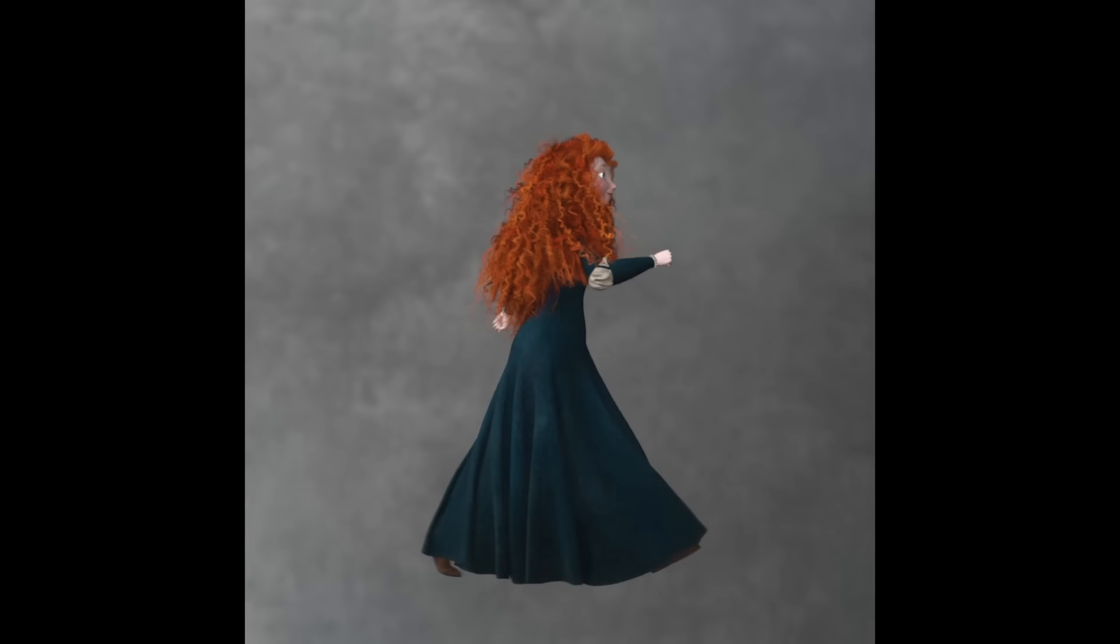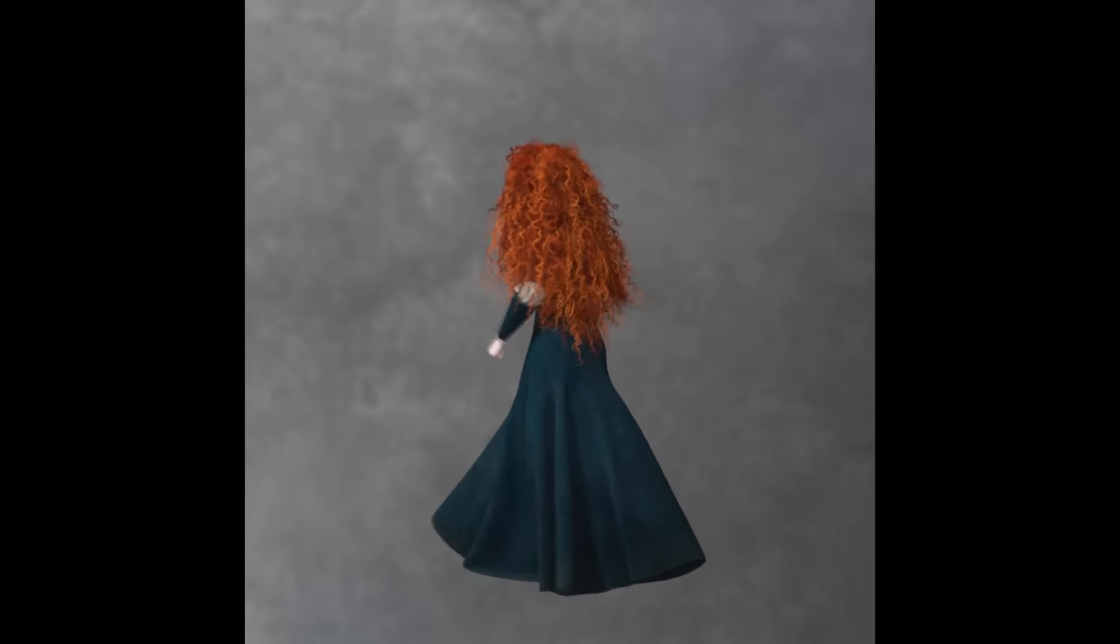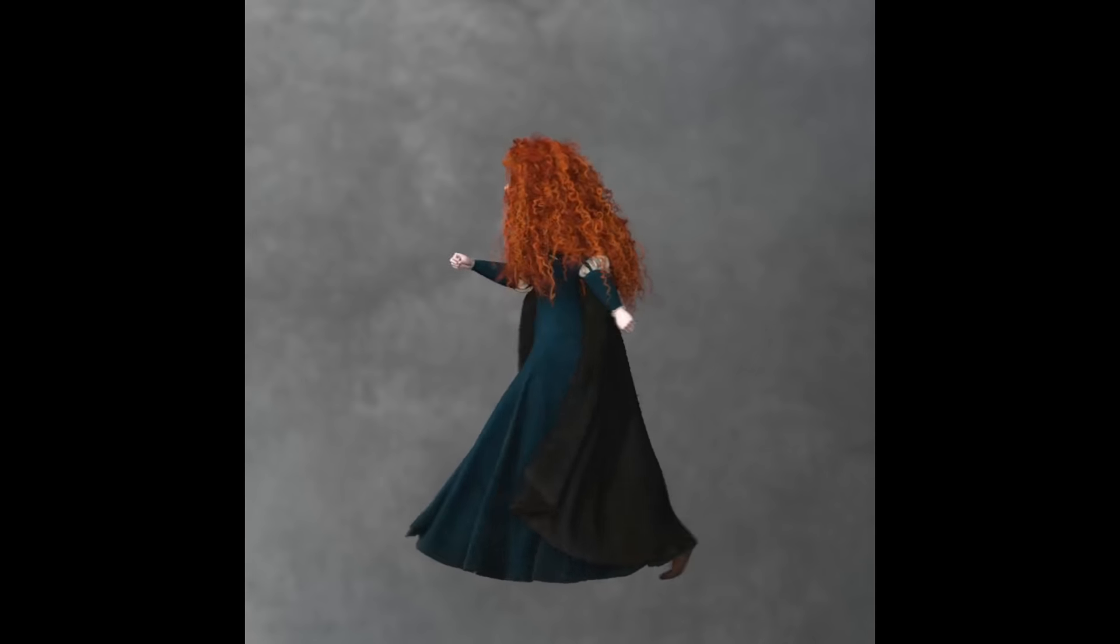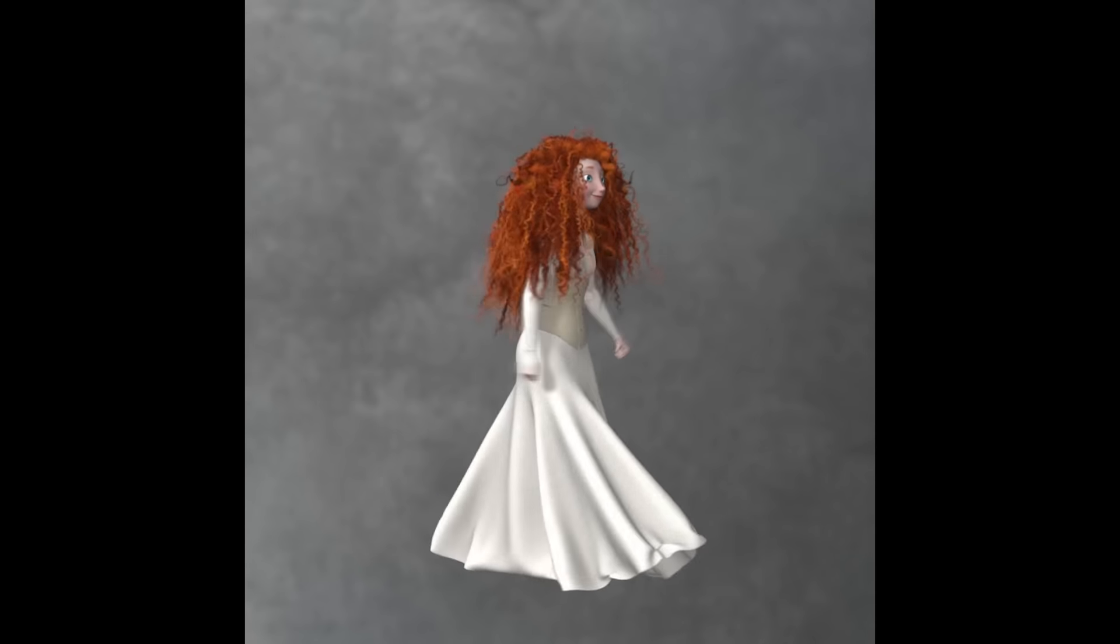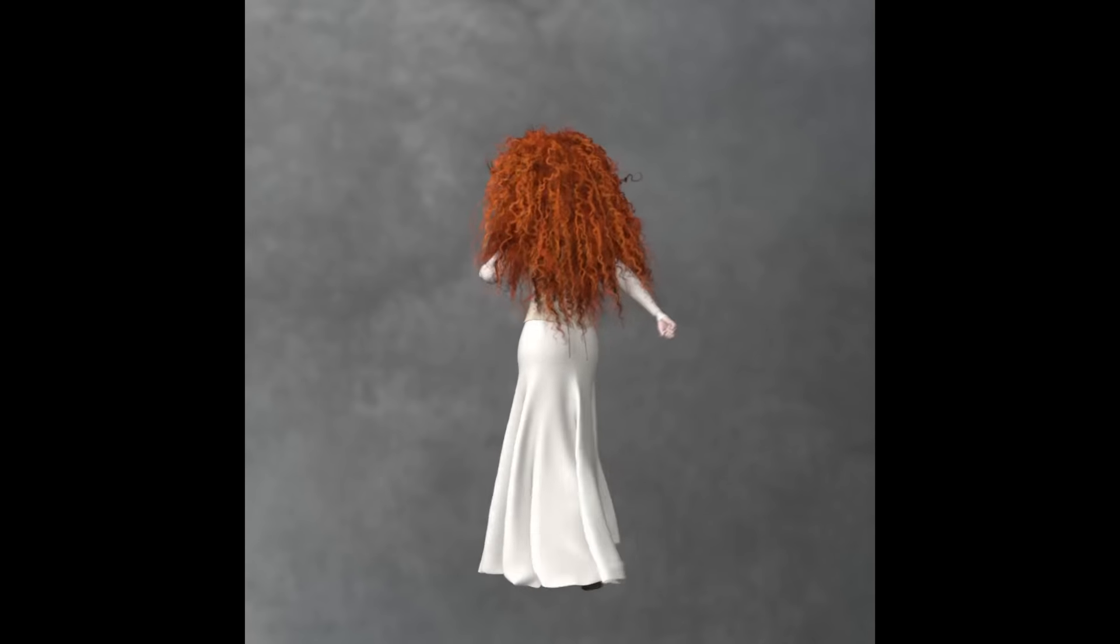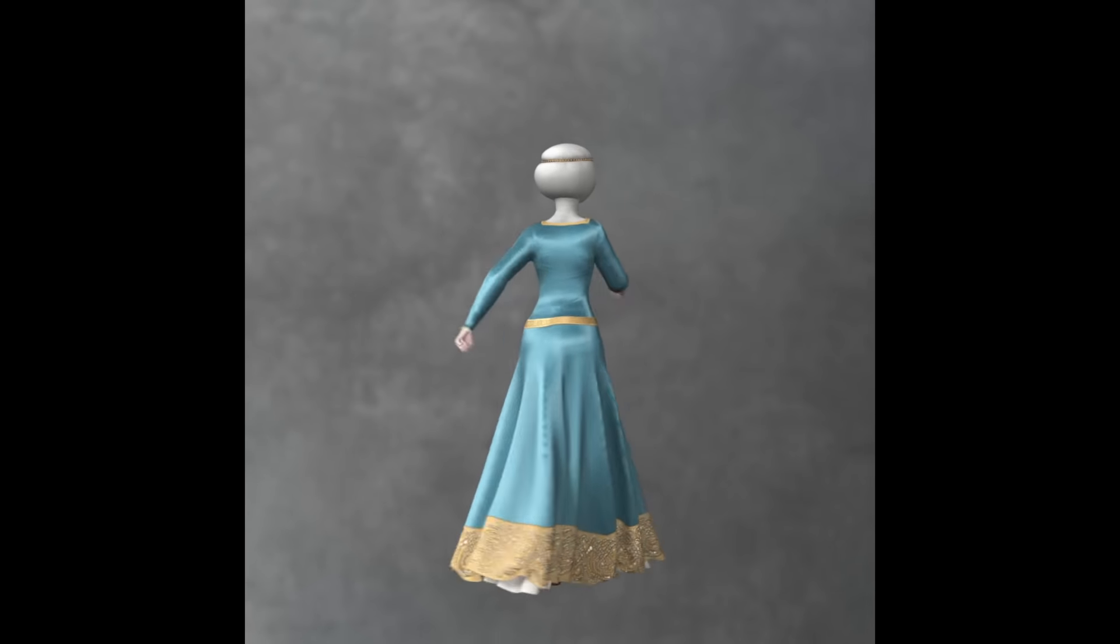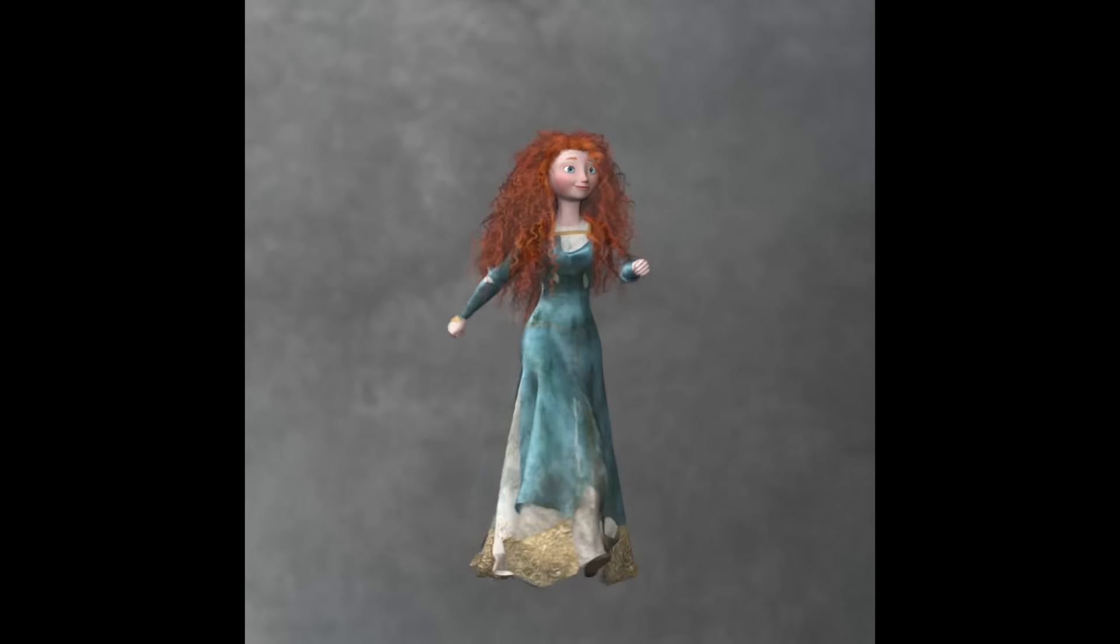Even clothing is simulated using masses and springs. In Brave, Merida had several garments that we needed to simulate, and each garment had their own spring values. These values were chosen to mimic different kinds of cloth, such as wool, cotton, and satin. As you can see, mass spring systems are super useful for modeling and simulating all kinds of different things.